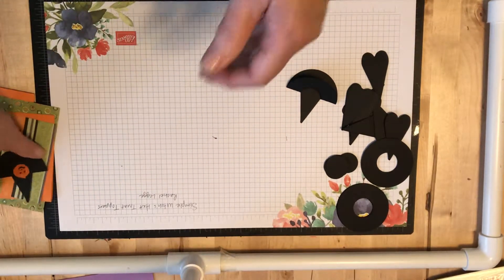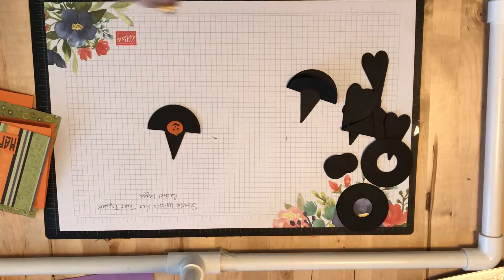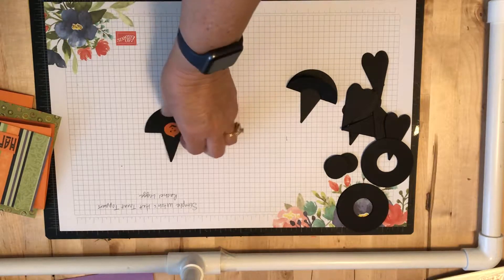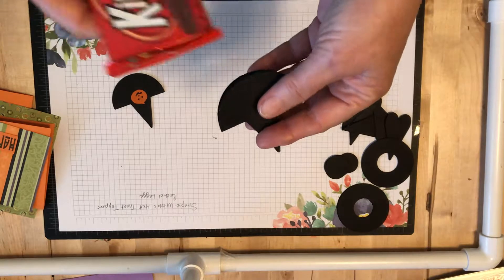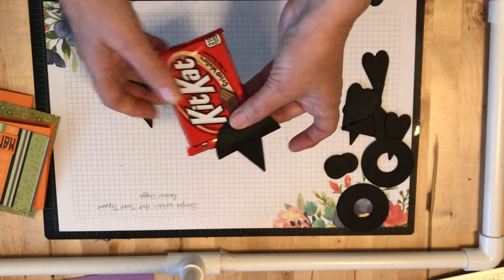But if you want to take it up a notch, as Emeril says, I wonder if you want to make a little treat topper out of it. So now I could take this, make my hat, and I could attach it to a candy bar.